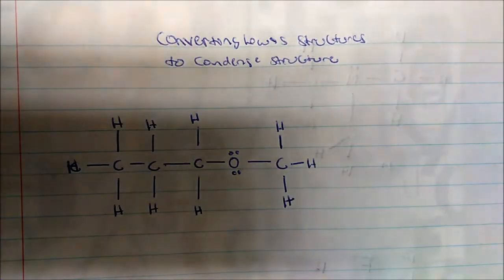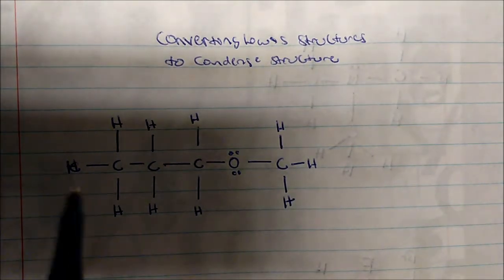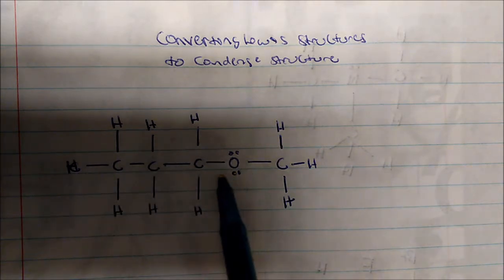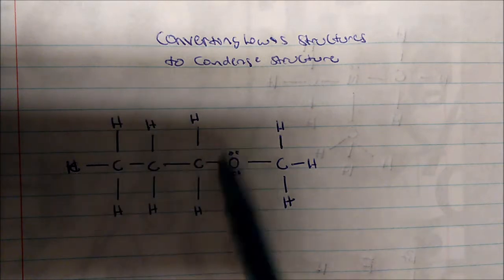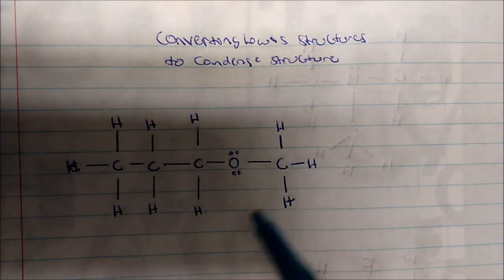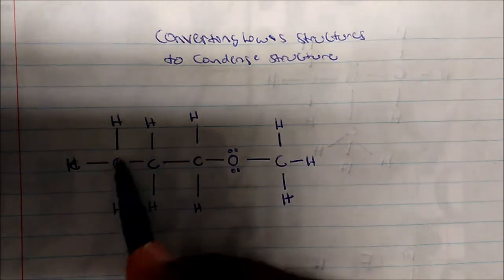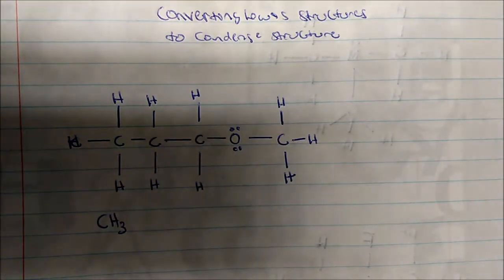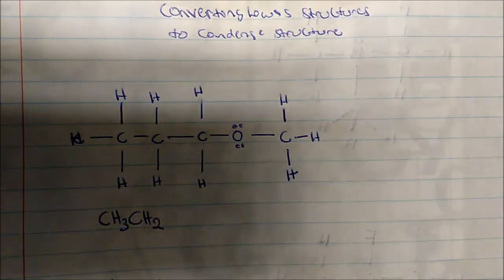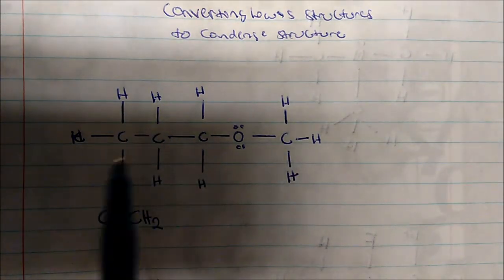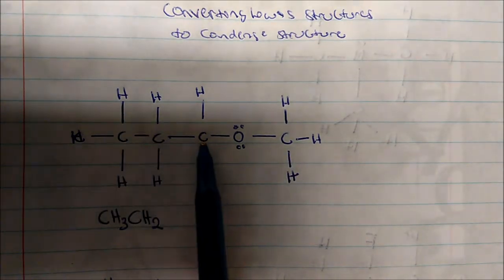Looking at this molecule, I see three carbons. What's bonded around it? I have H's, I have an oxygen, and I have a CH3 here. So the first carbon has three hydrogens — that's a CH3. I also see a CH2, and I see another CH2.